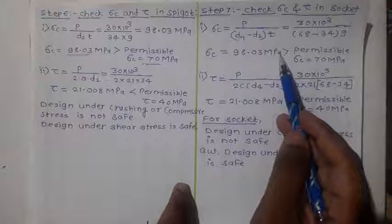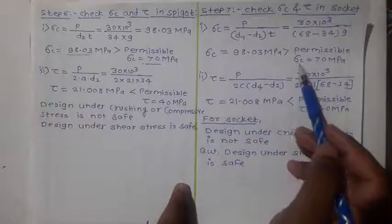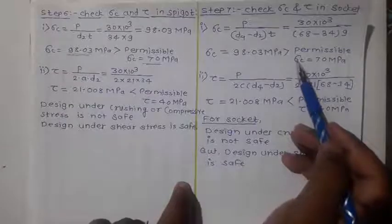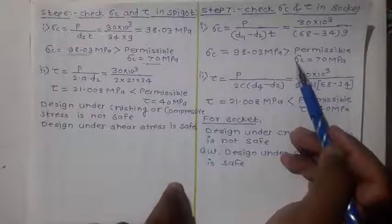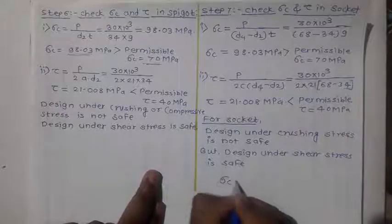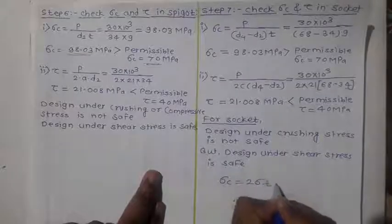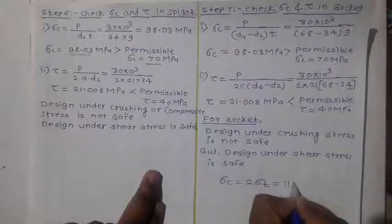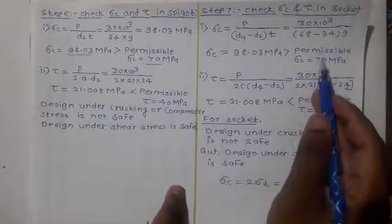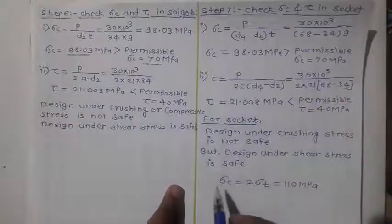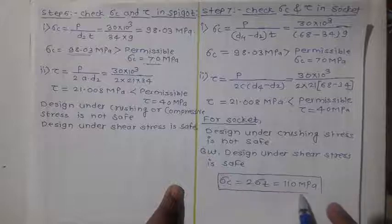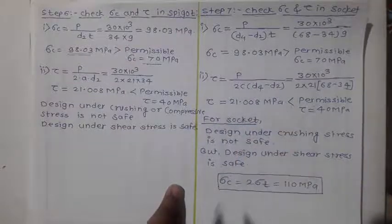This unsafe case arises because the permissible compressive stress for a cotter joint must be double the permissible tensile stress. If σc had been given as 2 × σt = 110 MPa, the unsafe condition would not have arisen. This can be considered a mistake in the problem statement.